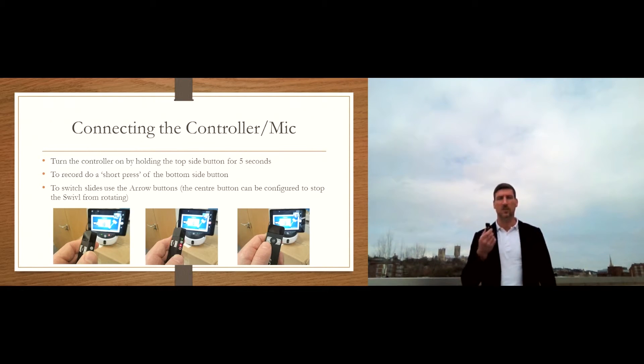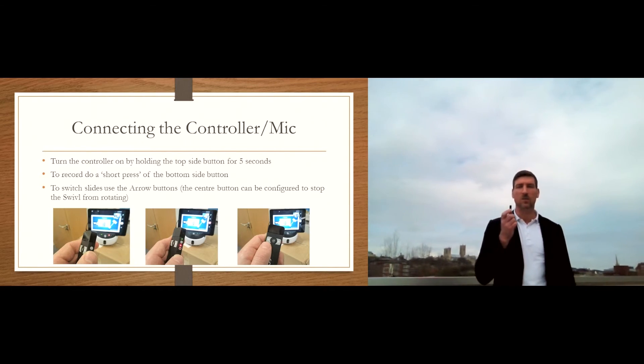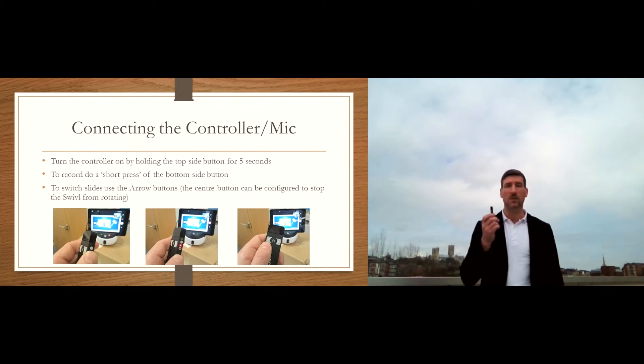One of the final steps is to turn the mic controller on. This is a simple procedure. On the side, there's a little button, the on button, the uppermost button. If you long press that, about five seconds, a green light will come on and the unit will start tracking. And then when you're ready to record, the button below is the one you press.